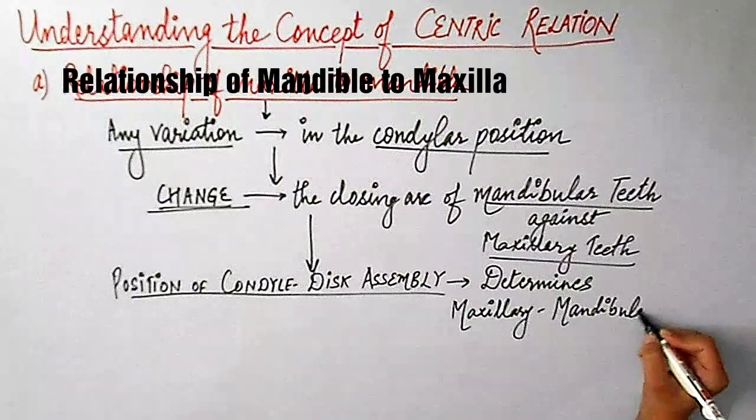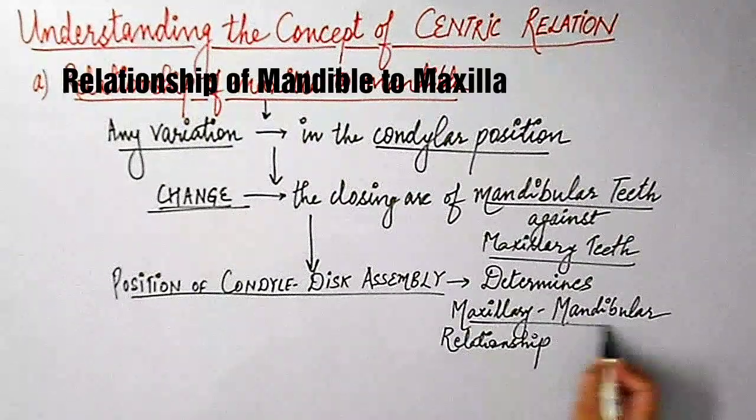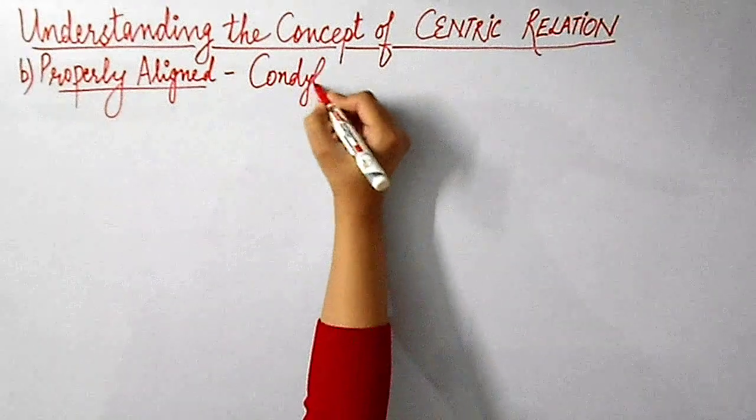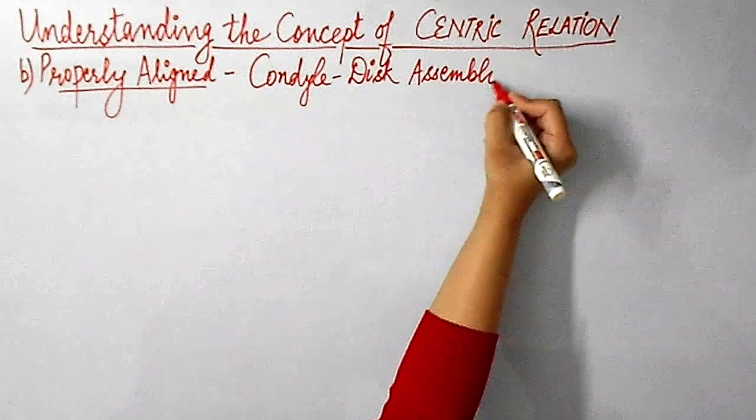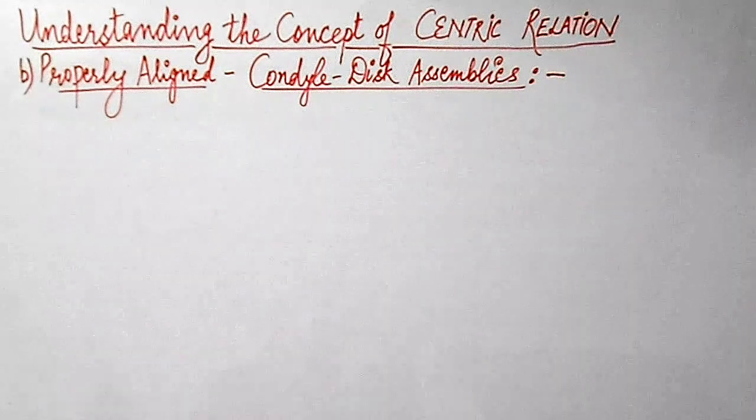Hence, the position of the condyle disc assembly determines the maxillary mandibular relationship during jaw closure.